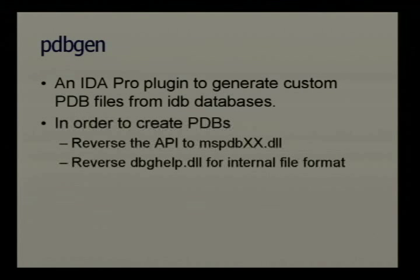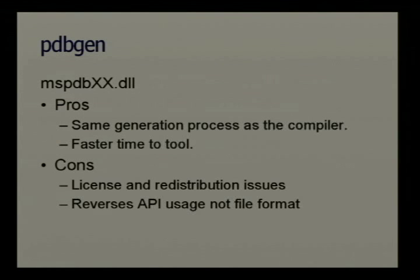This is why I'm here. I wrote a plugin called PDB Gen — a plugin for IDA. You run this plugin and it takes all the function names and comments you've added in IDA and makes a custom PDB. Then you load this PDB into your debugger and you have all your symbol information. This is a first step to move reversing forward. To create these PDBs, I had two choices: one was to reverse the API for the MSPDB DLL — the same way the compiler uses it — by hooking the DLL and watching how the compiler calls it.